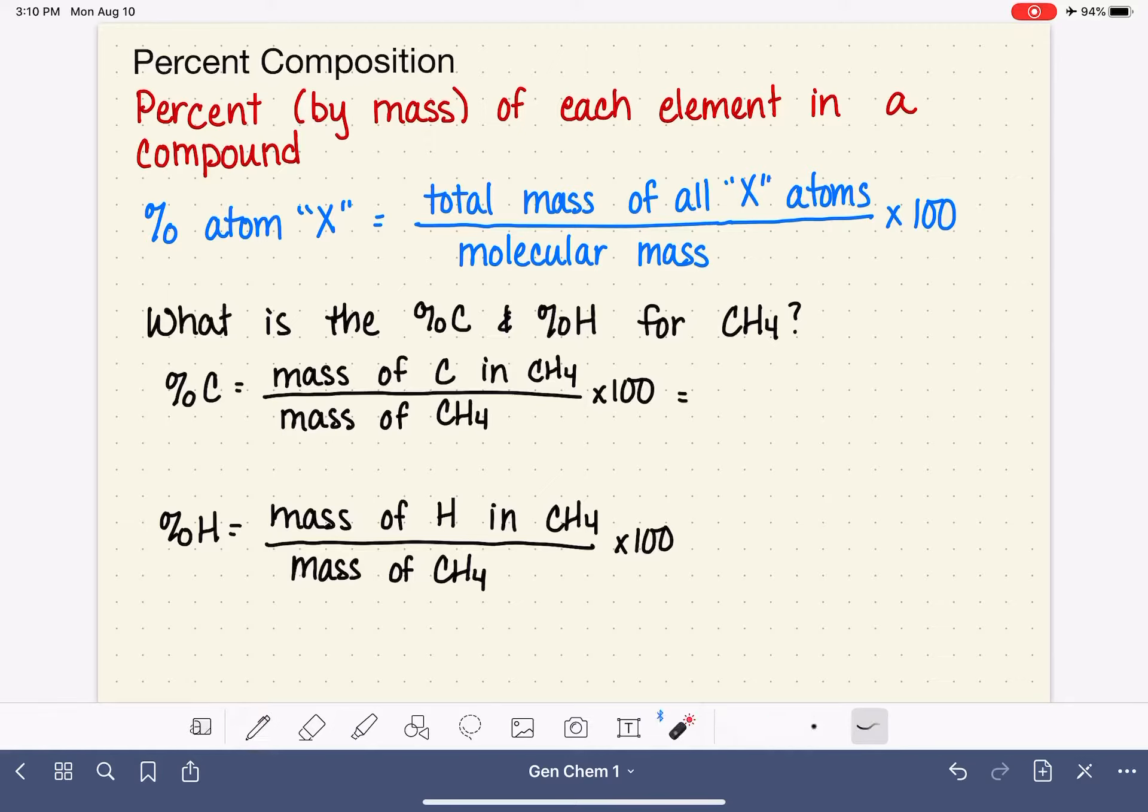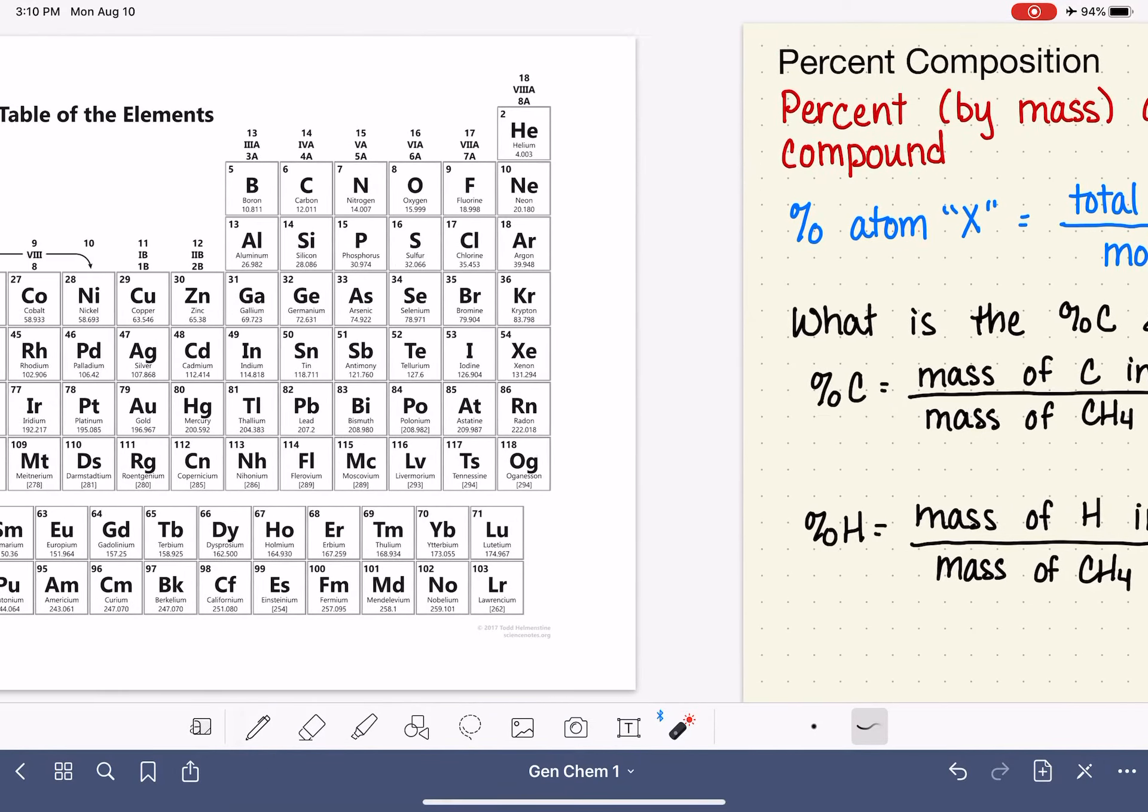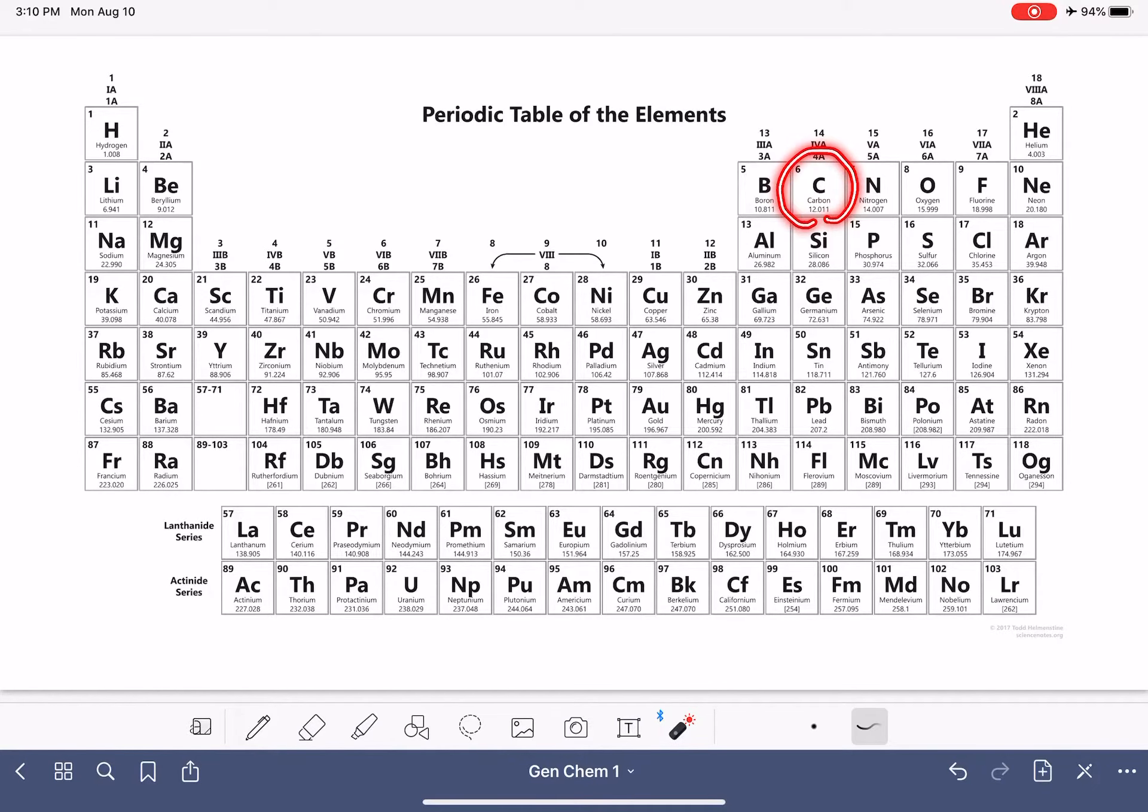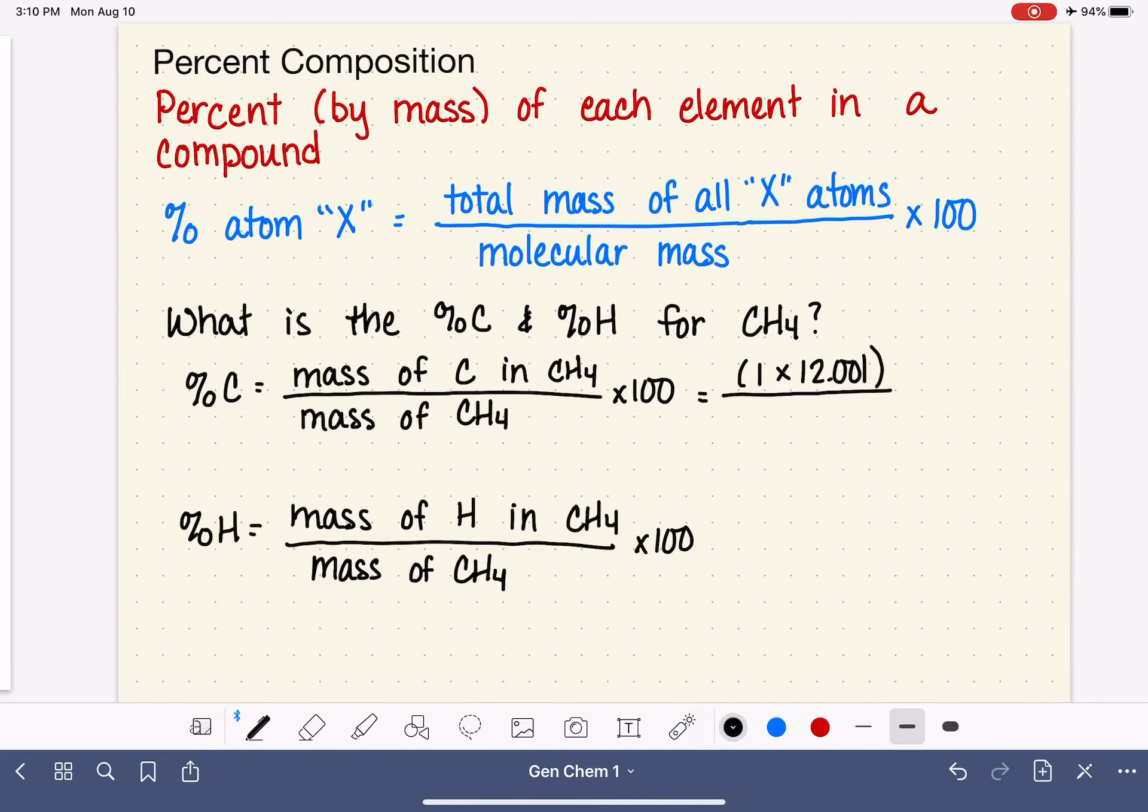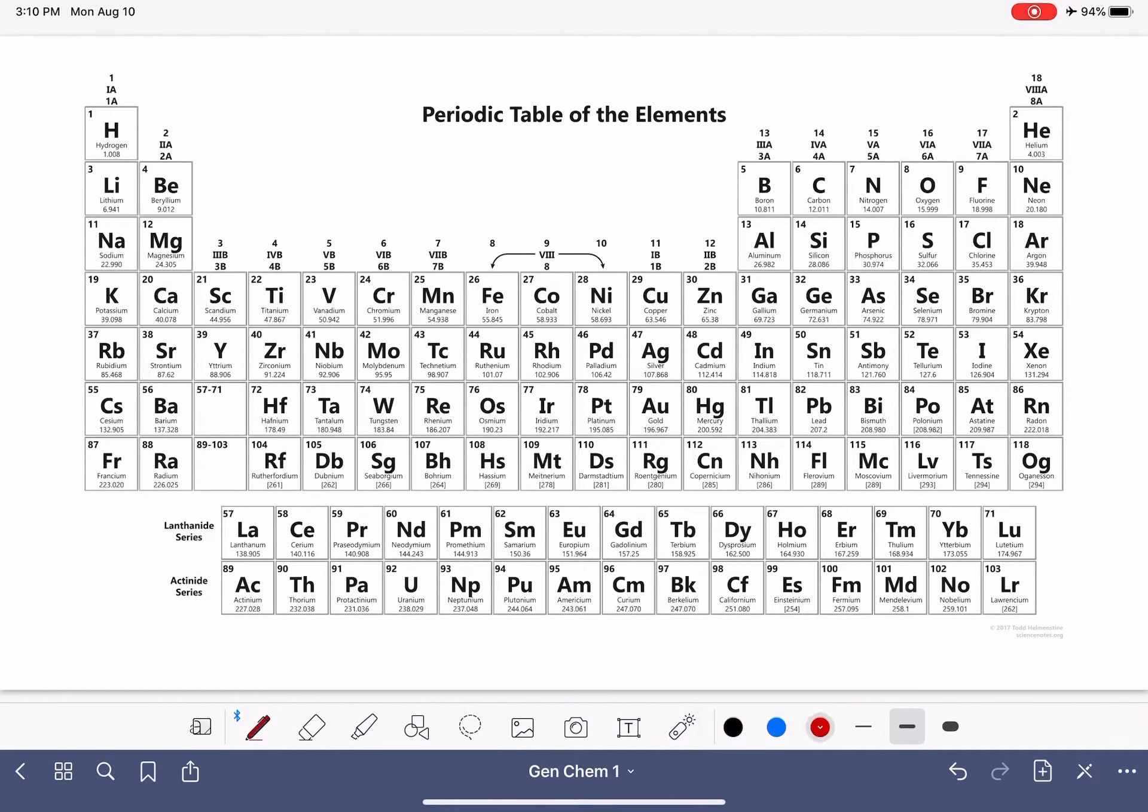Let's actually work this out. The mass of the carbon atoms in CH4, we have to take into consideration how many carbon atoms we have. In this particular situation, we only have one, and also how much that carbon weighs. Going back to the periodic table, finding carbon and looking at its atomic mass, 12.001, 1 times 12.001 AMUs. Then we're going to divide that by the molecular mass of CH4. So let's go figure that molecular mass out.